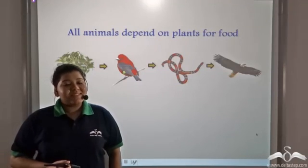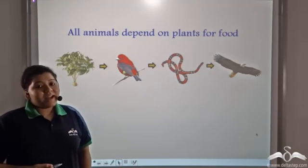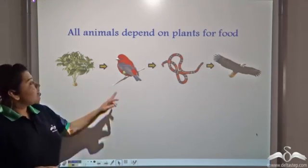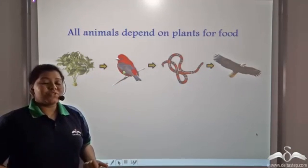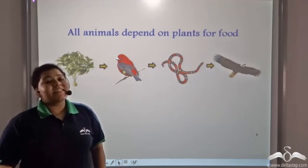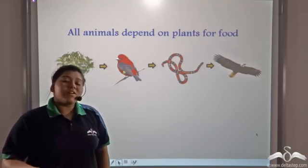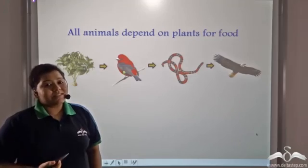All animals depend on plants for food. Few animals are directly dependent on plants for food, like some herbivorous animals that directly consume the plant. Few animals are indirectly dependent on plants for food; they consume those herbivorous animals that are directly dependent on plants.